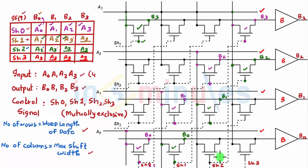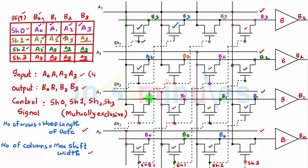Similarly, for shift 2 the active transistors form a path covering B0, B1, B2, and B3 — check the inputs and verify the connections. For shift 3, all four outputs B0, B1, B2, and B3 are connected to A3 through their respective on transistors. B0 equals A3, B1 equals A3, B2 equals A3, and B3 equals A3 — all verified. This is the complete 4x4 barrel shifter.